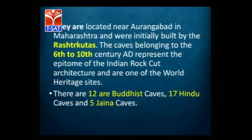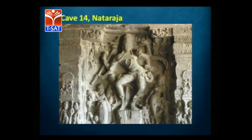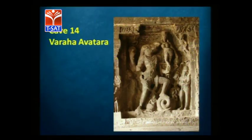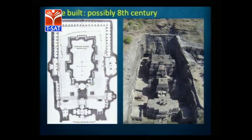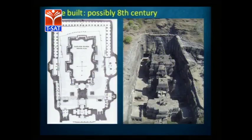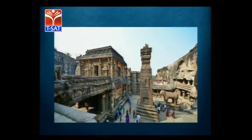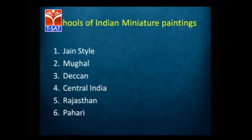At Ellora you have twelve Buddhist caves, twelve Hindu caves, and five Jain caves. Examples of Brahmanical Hindu caves include cave number fourteen with a sculpture of Nataraja and another of the Varaha avatara of Vishnu. The Kailash Temple — cave number sixteen — is world-famous, also notified by UNESCO. It was possibly built in the 8th century AD. It is a monolith entirely carved out of stone — not a constructed temple but a carved-out temple.